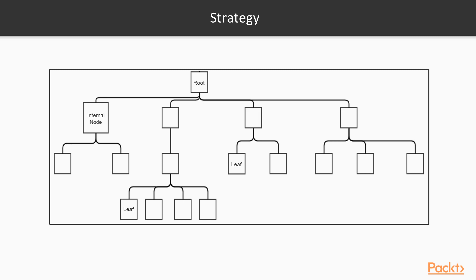At the end, we find some nodes that have no children and hence are called leaves. Note that the tree is drawn upside down — the root is at the top and the leaves are below. This is just a convention that most people prefer. Think of this as a reflection of a tree on water.